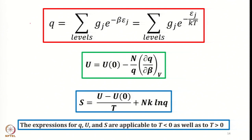So we had expressions for Q, then from Q we switched to U, and from U we switched to S. S equals (U − U0)/T + Nk*ln(Q). In the derivation of these equations, we never specified that temperature must be positive or negative, meaning the expressions are applicable to both positive and negative temperatures. We derived Q, connected Q with internal energy, and connected Q with the entropy of the system.